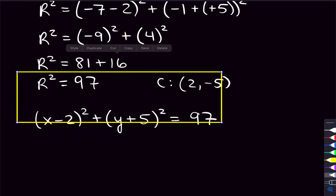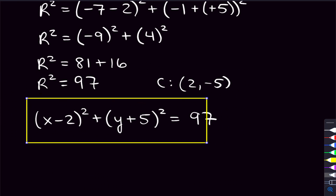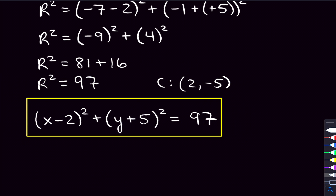Now I have the center (2, -5) and r squared = 97. Plugging into the equation: the x-coordinate of the center is positive 2, so we write (x minus 2) squared. The y-coordinate is negative 5, so we write (y plus 5) squared. And r squared = 97 goes on the other side. The equation is: (x minus 2) squared plus (y plus 5) squared equals 97.